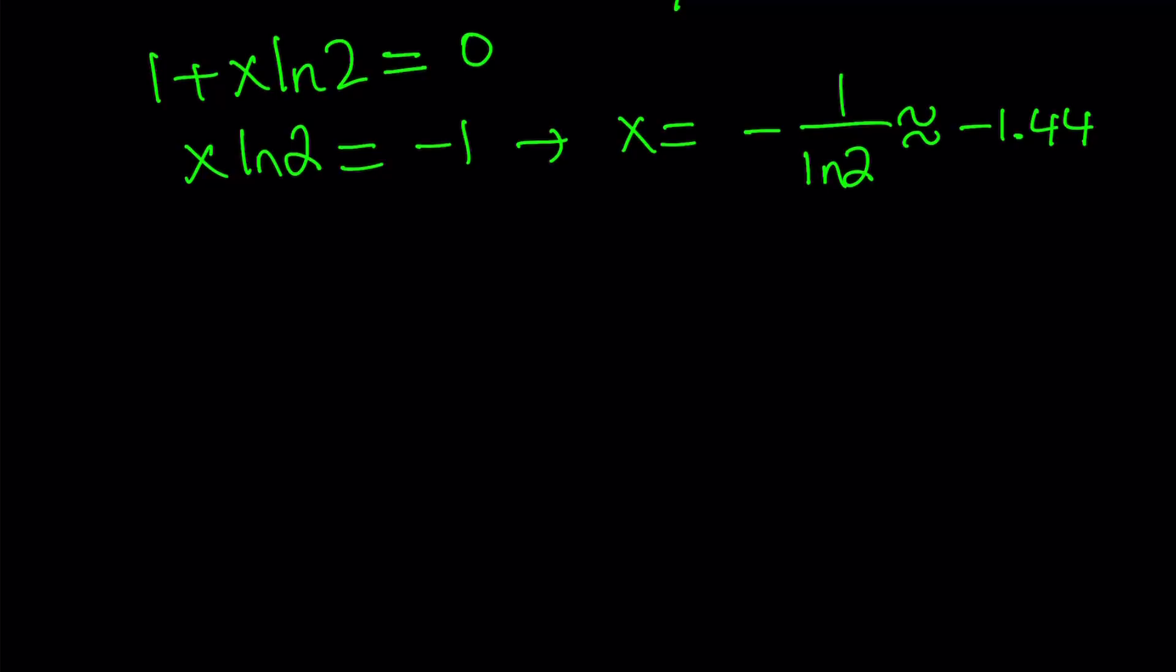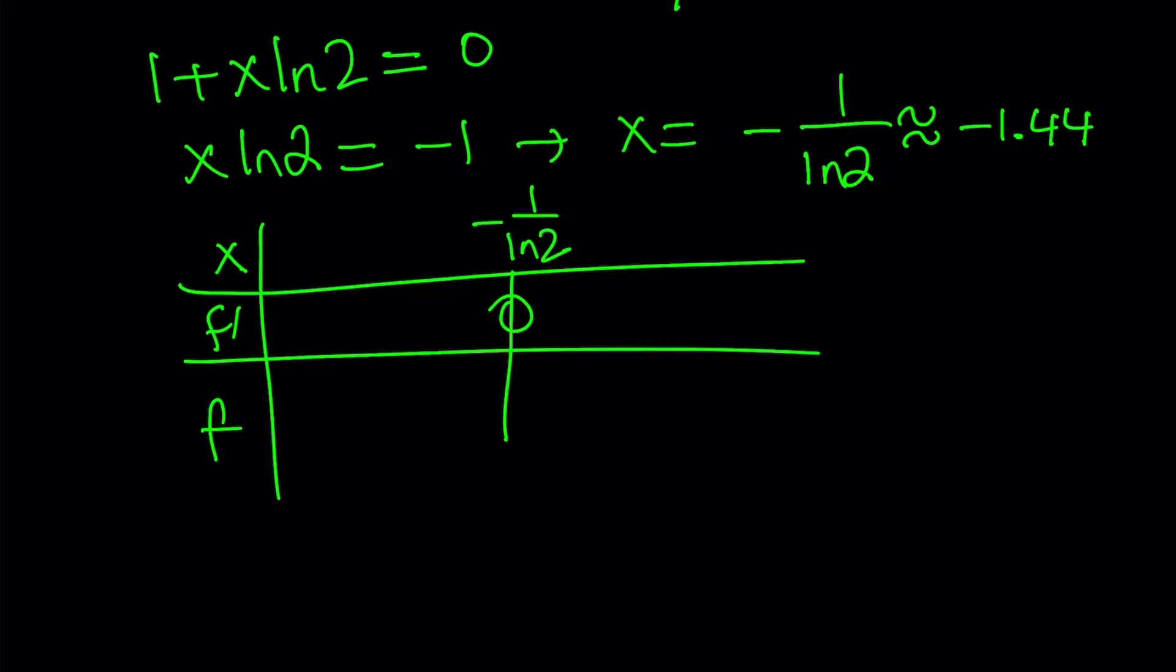Now, let's go ahead and make a table. I know some folks are not going to be happy because I'm not using the second derivative test, but I like the first derivative test better because a table, I think, is better than taking the second derivative of a function. So let's make our table with rows for x, f', and f. The critical point for f' is -1/ln(2). Like I said, it's about -1.44.